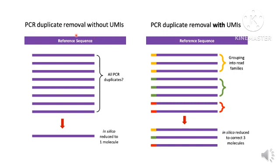For better understanding: after PCR amplification, without UMIs you cannot distinguish whether reads are PCR duplicates or true copies of the original DNA. In silico, all duplicates would be reduced to one molecule. But when you tag each sequence with a UMI, you can differentiate molecules based on their UMI signature. UMI 1, 2, and 3 are grouped accordingly — each bundle represents one distinct original molecule, giving you three correct, distinct sequences.